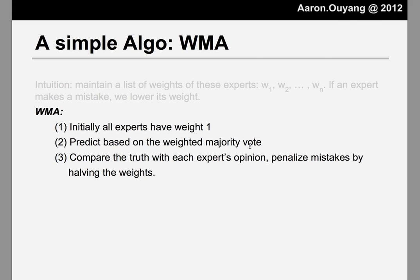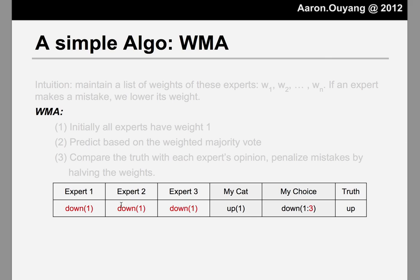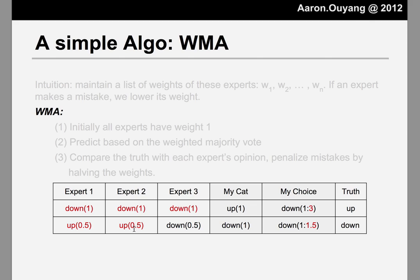Let's illustrate the algorithm with an example. On the very first day, each expert has exactly the same weight of 1. We take the majority vote, which goes to down, so we predict down on the first day. But it turns out that the stock price goes up. So three of them made a mistake and we penalize them. On the next day, those three have a weight of only 0.5, while the one who did not make a mistake still has a weight of 1, unchanged. We just follow this path, and so on and so forth.